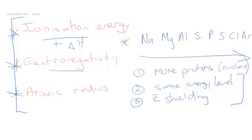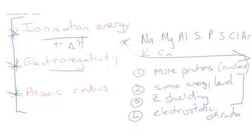If you were to go down to the next energy level — for instance, to potassium and calcium — that would be further out, a different energy level, and there'd be more electron shielding for potassium compared to sodium. The fourth thing to consider is electrostatic attraction, which is just the attraction that the protons or the nuclear charge has for those electrons. As we go across, we get an increase in nuclear charge with the same energy level, so electron shielding is the same, and the electrostatic attraction is actually increasing.